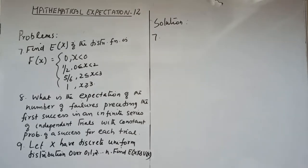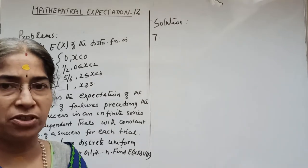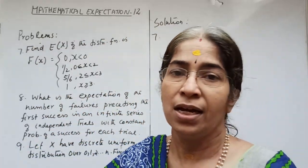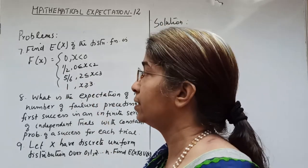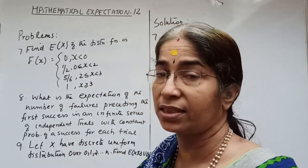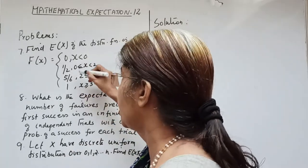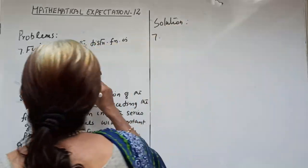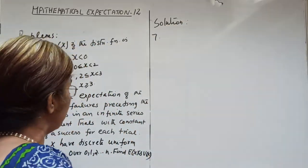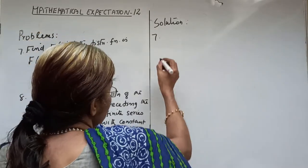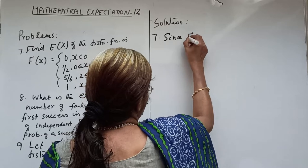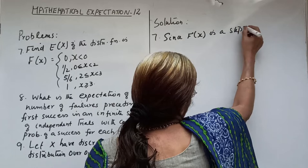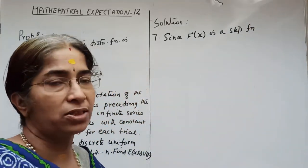Since capital F of X is a step function — a function which increases only by jumps — we should know it is a discrete random variable. This is clear because the values are constants throughout the intervals, confirming it is a discrete case.